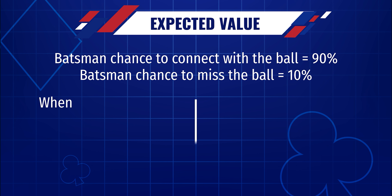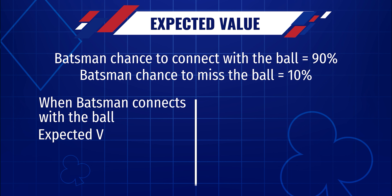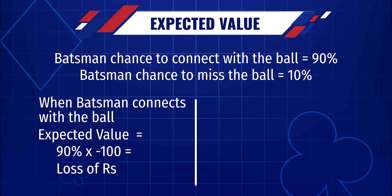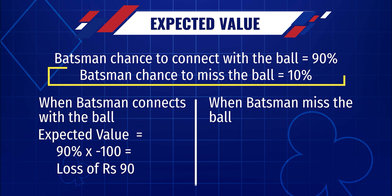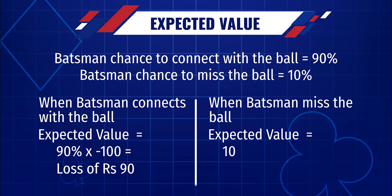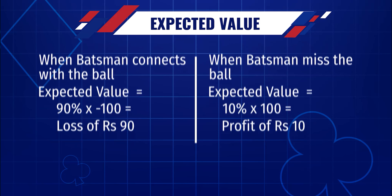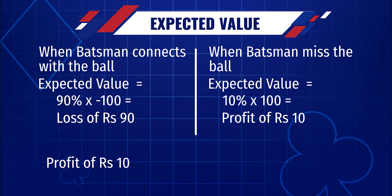When he connects with the ball, our expected value is 90% into minus 100, for a loss of rupees 90. When he misses the ball, which happens 10% of the time, our EV is 10% into 100, for a profit of rupees 10. So when considering the batsman bet, we calculate the total EV as the EV of him missing — a profit of rupees 10 — minus a loss of rupees 90 when he connects, for a total loss of rupees 80.